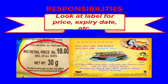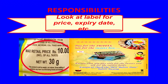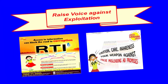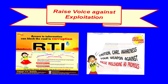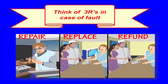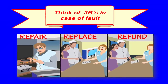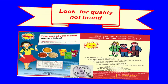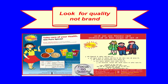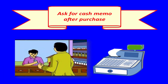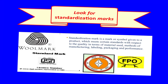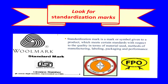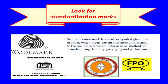Consumer responsibilities: always look at the label for price, expiry date, and other details. Raise voice against exploitation every time. Think of the three R's in case of a fault — that is, repair, replace, and refund. Look for quality and not the brand name. Ask for a cash memo after making every purchase.